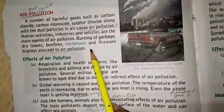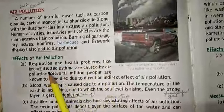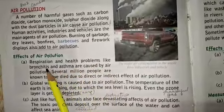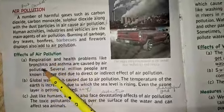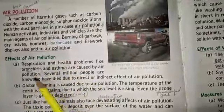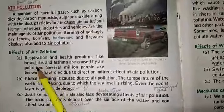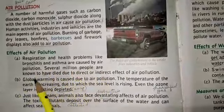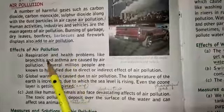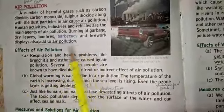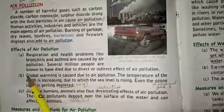Effect of air pollution: when the air is polluted, respiration and health problems like bronchitis and asthma are caused. When you breathe in impure air, bronchitis — a problem related to your respiratory system causing difficulty in breathing — and asthma, which causes continuous coughing, result. Several million people are known to have died due to direct or indirect effects of air pollution.